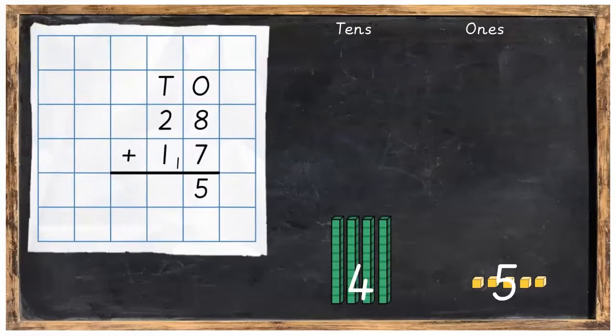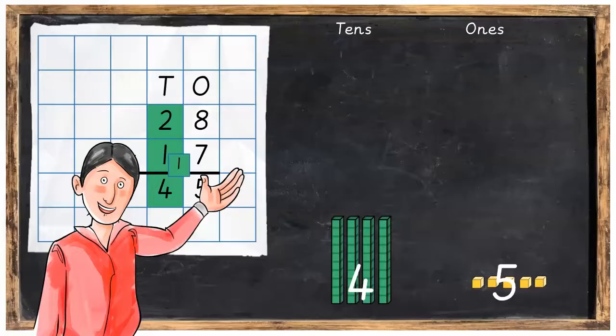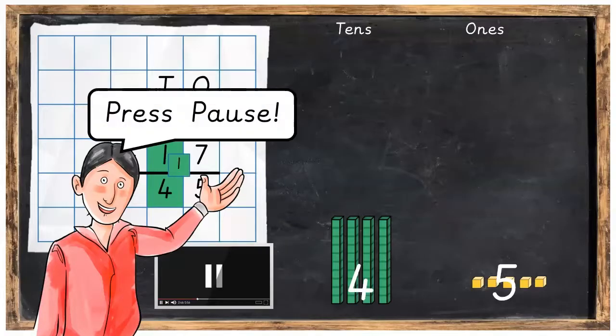If we now look back at our sum, we've had 2 tens plus 1 ten plus the 1 ten we brought over, which altogether is equal to 4 tens. I'd like you now to complete the tens part by adding the tens together with the Dienes Blocks and then doing the same with the sum. Press pause and press play when you're ready.